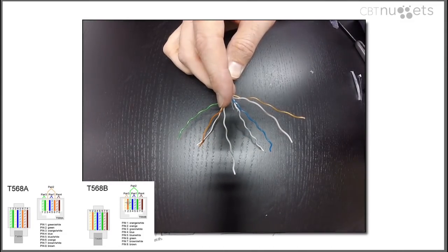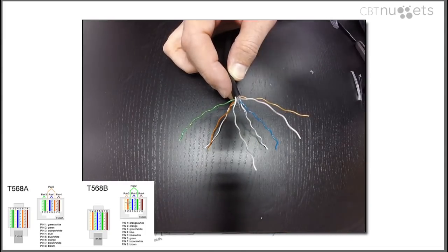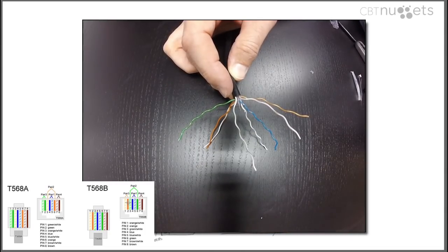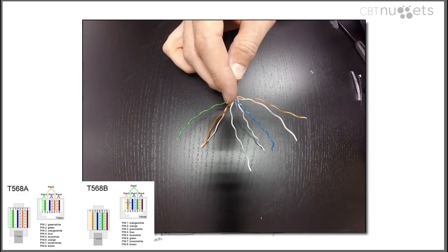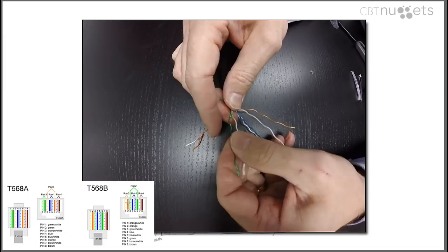If you match an A to a B, meaning on this side we wire it T568A and on the other side we wire it T568B, we've technically made what's known as a crossover cable. So our patch panel is wired with T568A.